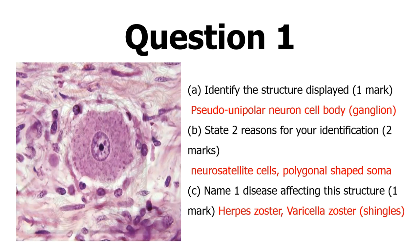For example, on question one, this is part of neurohistology and this is testing on the peripheral nervous system. So this is what we call a pseudo-unipolar neuron. This is the cell body of the pseudo-unipolar neuron, and you can see the nucleus there of the pseudo-unipolar neuron.